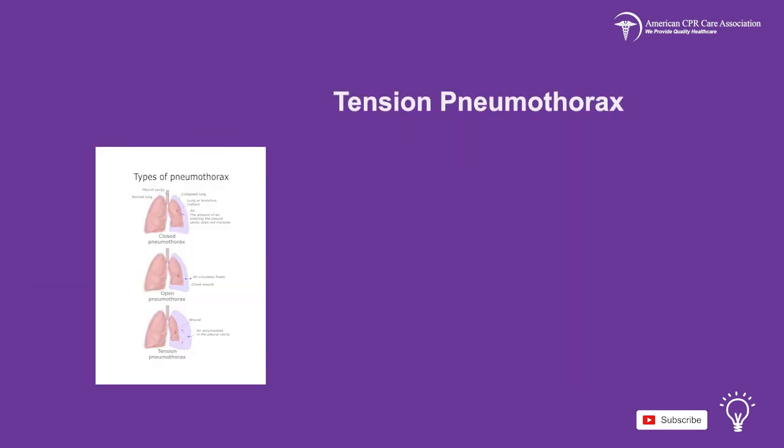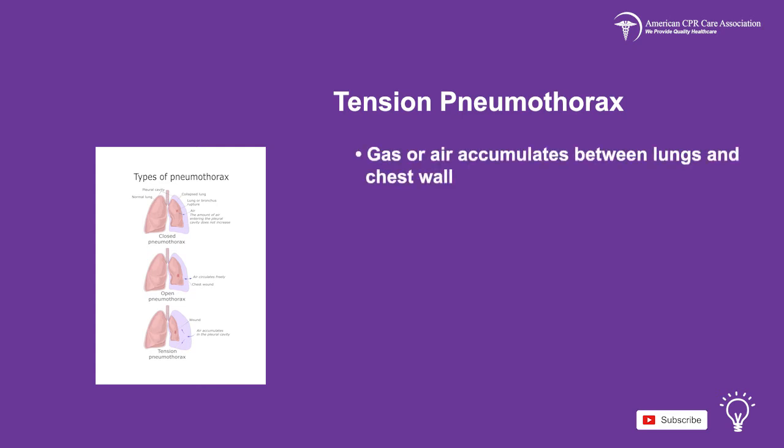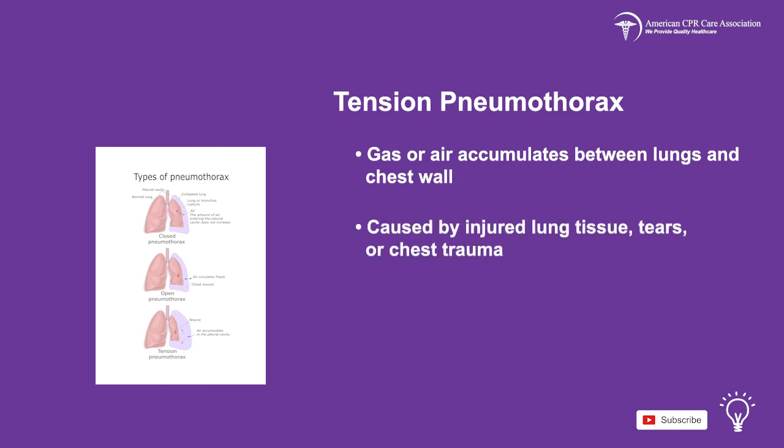The second type of obstructive shock is tension pneumothorax, which can be life-threatening and jeopardize cardiopulmonary functions. This happens when gas or air accumulates between the lungs and chest wall, and may be caused by injured lung tissue tears or chest trauma.